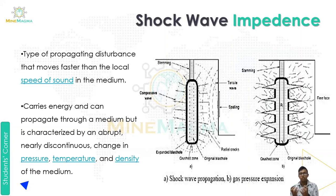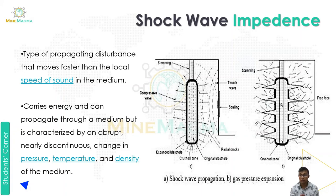Let us start with shockwave impedance. Impedance is how the movement is. We see types of propagating disturbance that moves faster than the local speed of sound in the medium. As you can see here, there are two types: shockwave propagation and gas expansion. In shockwave propagation, we have our borehole with stemming, and after the explosion, compressive waves come out and breakage happens around the expanded blast hole.